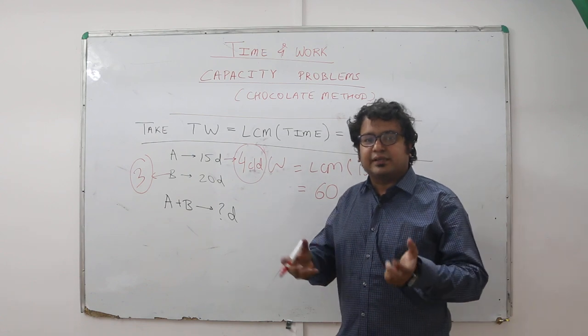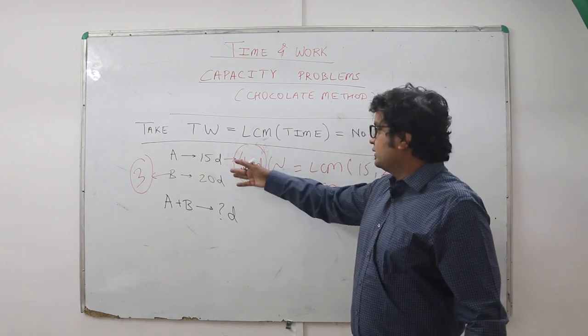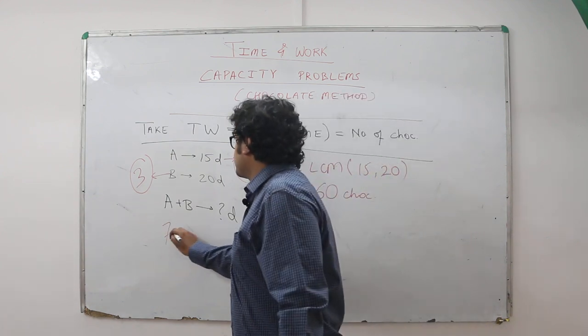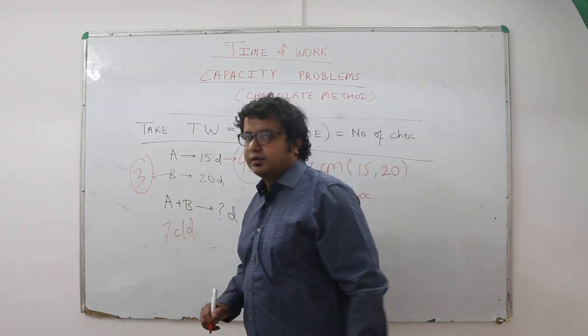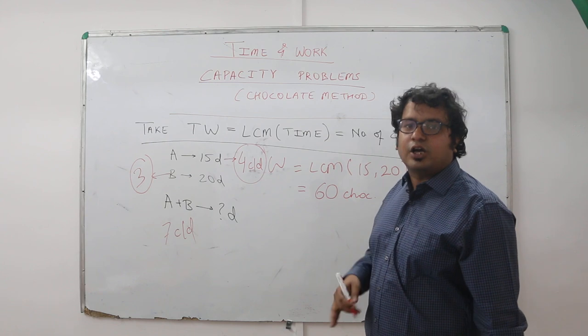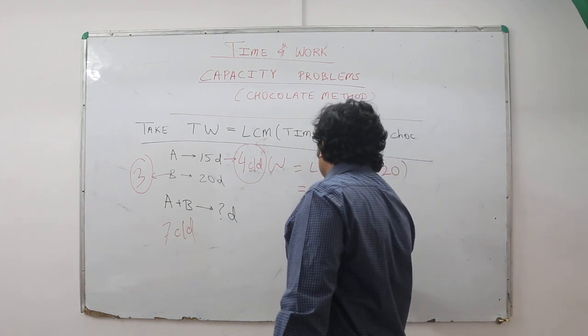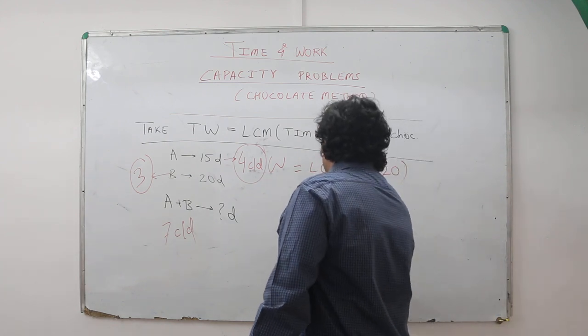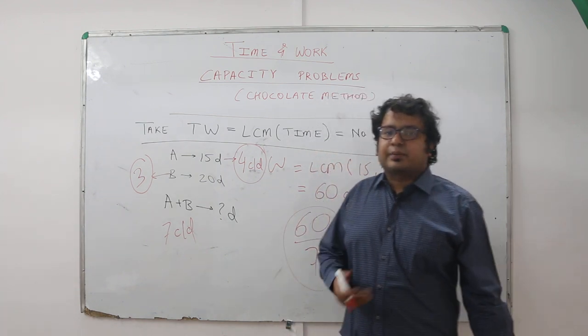So it becomes a very simple question now. The question is asking you: in how many days will A and B together eat the 60 chocolates? So add the two: 4 plus 3. A and B together eat how many chocolates per day? 7 chocolates per day. How many chocolates are there? 60. So how much time will be taken? 60 divided by 7. This becomes the answer.